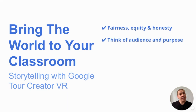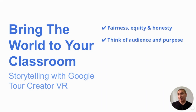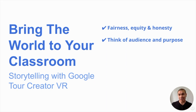Think about your audience and your purpose. If it's for a younger audience, probably less text is better, and pace your narration and audio a little more slowly. For an older audience, use more advanced vocabulary, more text, and more provocative imagery. Think about your purpose — are you trying to entertain, teach, or just inform people about something really interesting?